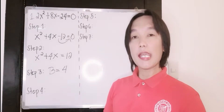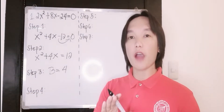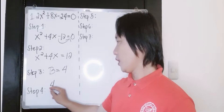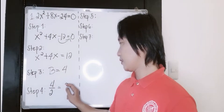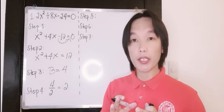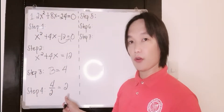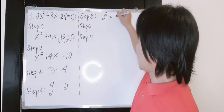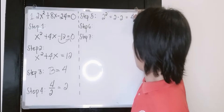Step number 4 is we will get the half of the value of our letter b. In that case, 4 will be divided by 2, and the answer is 2. Step number 5 is we are going to square the value from step number 4. So we have 2 squared, that's 2 multiplied by 2, and the answer is 4.